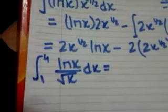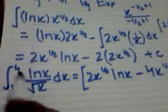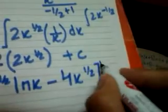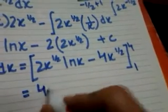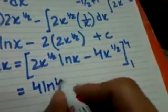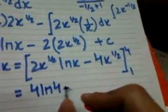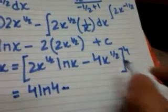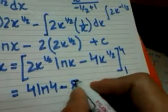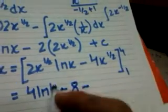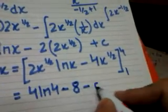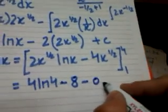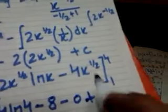This equals the same thing, now with limits 4 and 1. Put in the values: 2 into 4 to the power 1 by 2, that's 4 ln 4, minus 4 into 4 to the power 1 by 2, that's 8. The ln 1 term is 0, so minus minus becomes plus 4 into 1 to the power 1 by 2, that's simply 4.